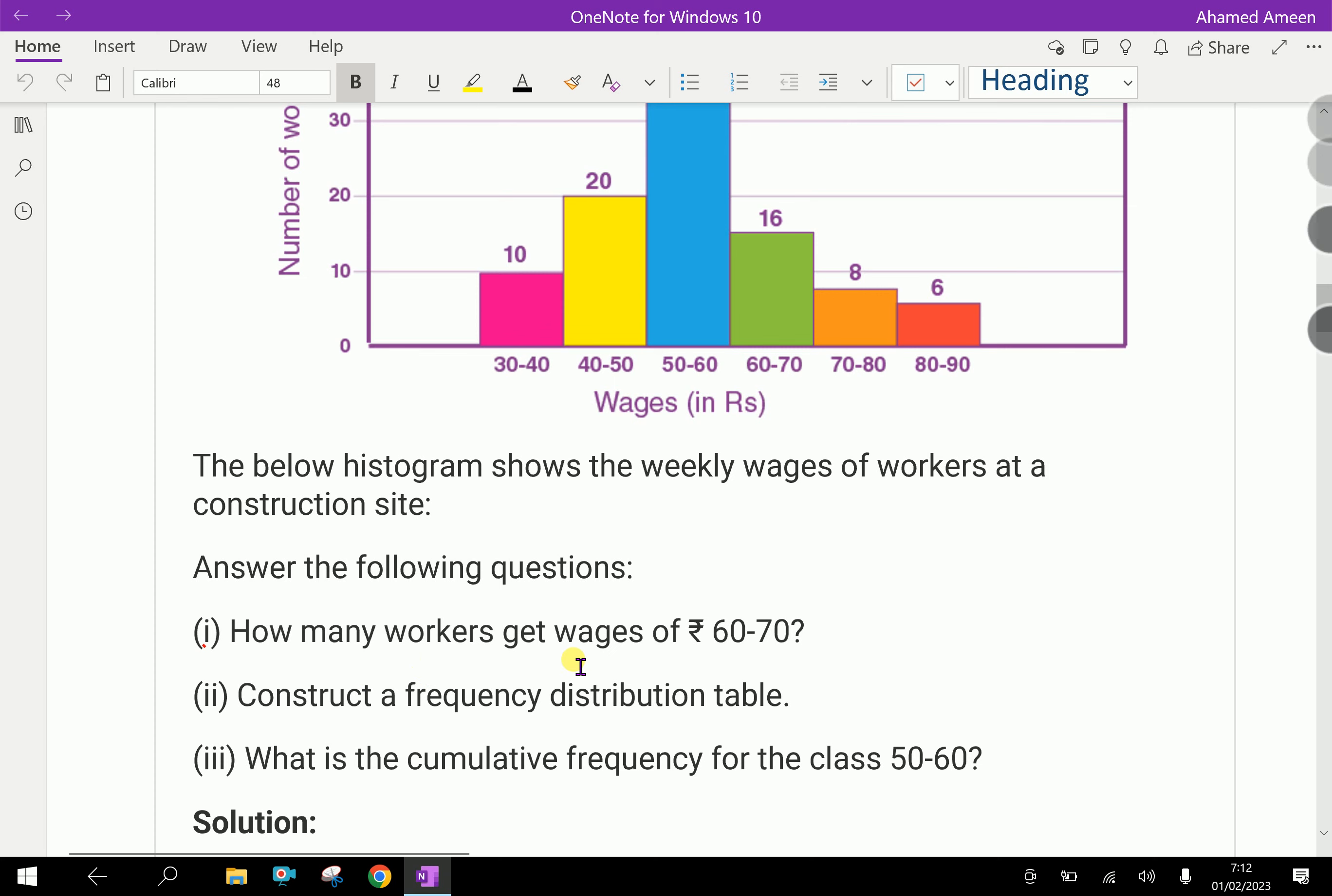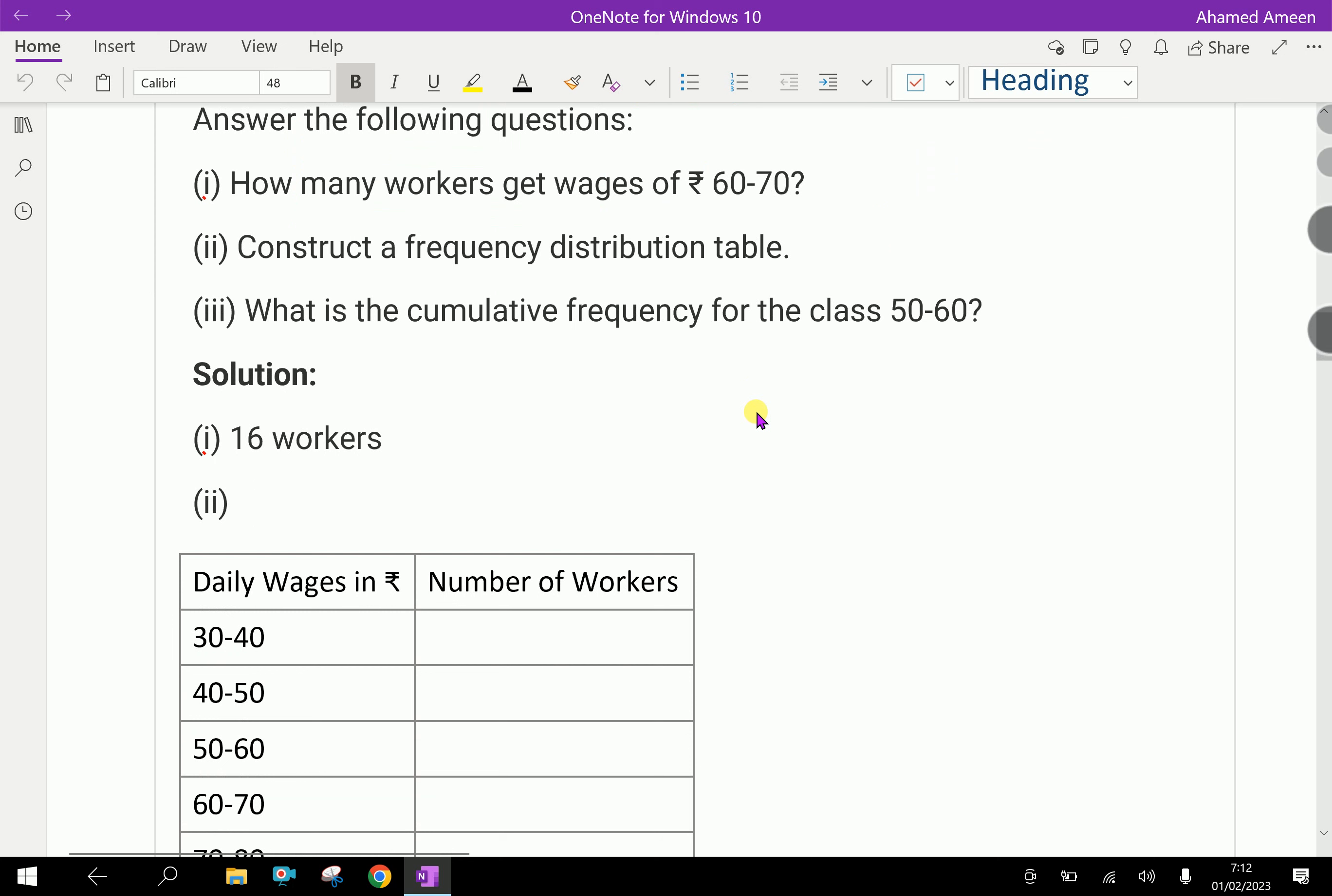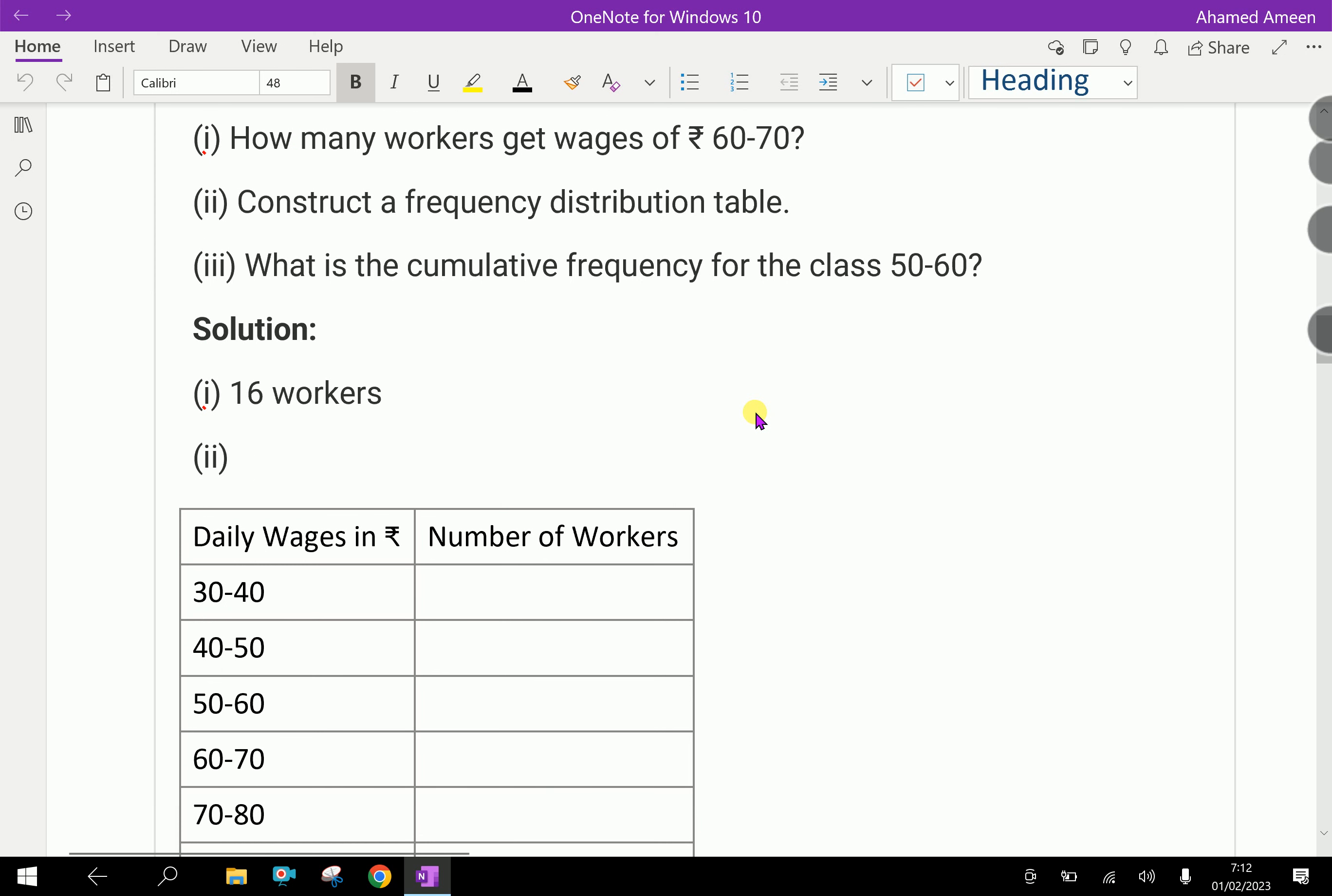First, how many workers get wages 60 to 70? 60 to 70 has 16 workers.